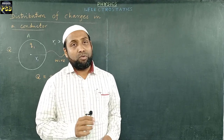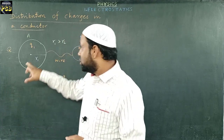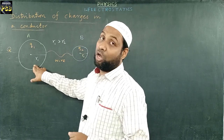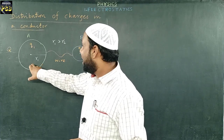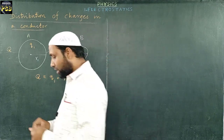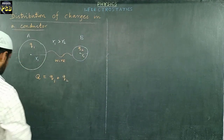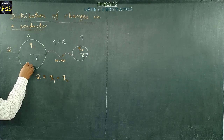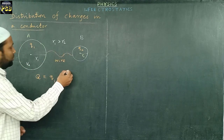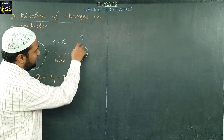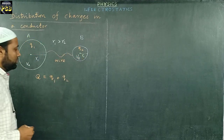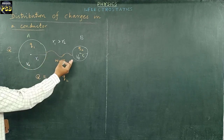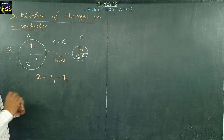The distribution of charge occurs till the voltage or potential of A and B becomes equal. The electric potential of A is taken as VA and the electric potential of B is taken as VB. Till VA becomes equal to VB, the transfer of charge occurs.